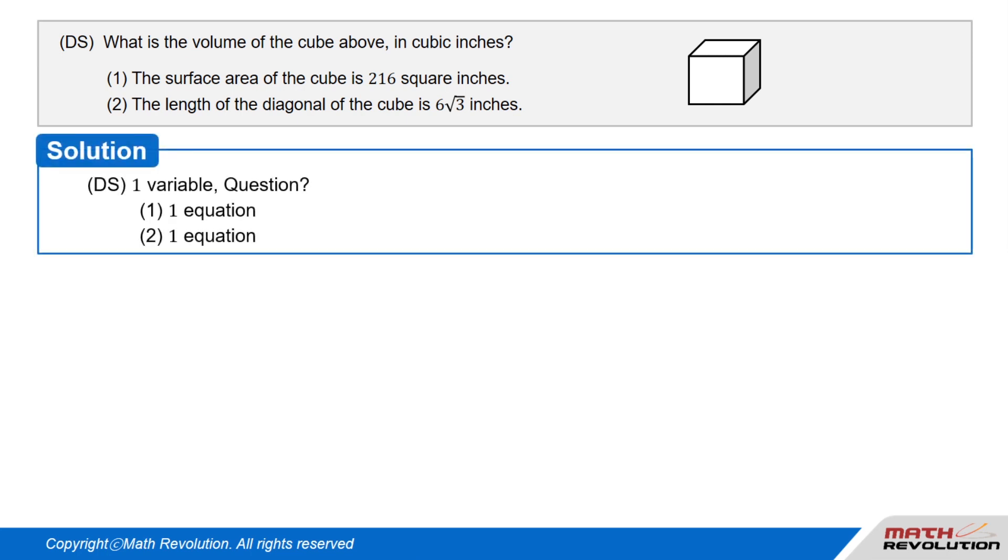Solution. Now we will solve this DS question using the variable approach. DS. One variable. Question. Condition 1 gives one equation. Condition 2 gives one equation.